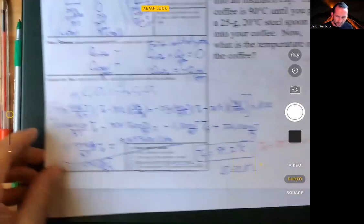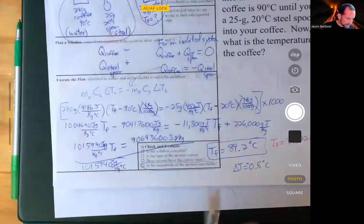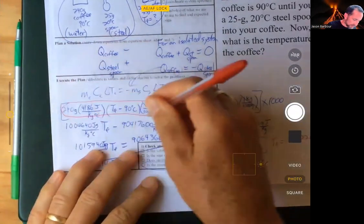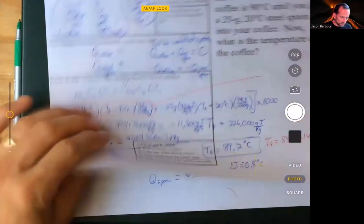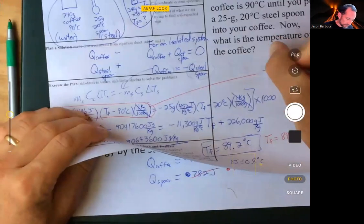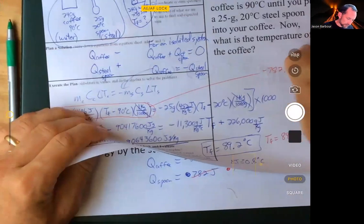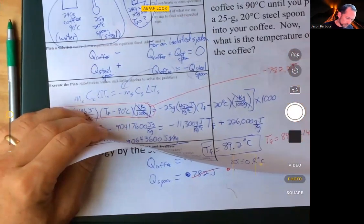Then when I go back and I plug in to see how much energy there is in this, that comes out to be negative 782.2, not degrees, joules.